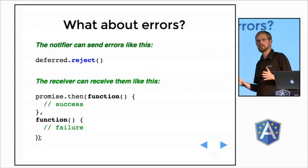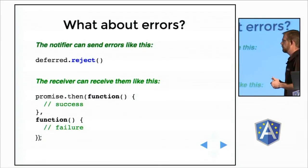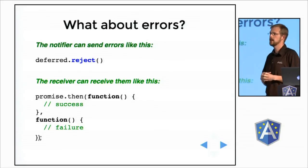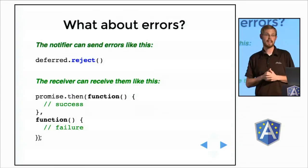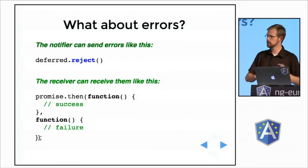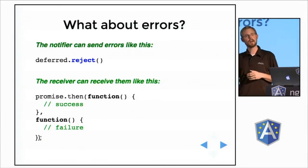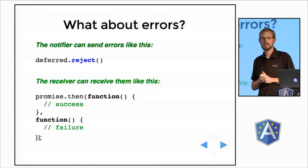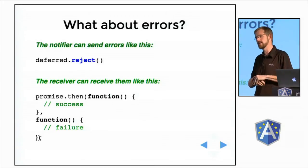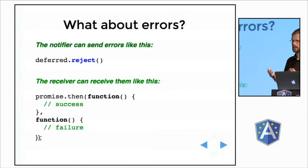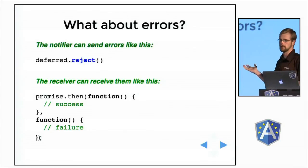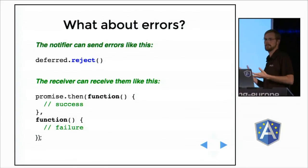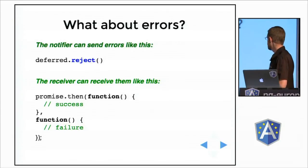What about errors? Not all asynchronous operations end happily. For those moments when things go wrong and you want to notify your callers, you have the reject method. Previously we called deferred.resolve — that is the happy path, when you want to pass back the requested data and notify the caller that everything is fine. But you also have reject. You can pass data, and the caller who got your promise can connect a callback to a second argument in the then function. The first argument gets called on resolve or success, and the second gets called on failure or reject.